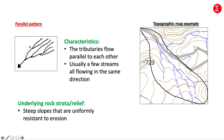In the parallel pattern, tributaries flow parallel to each other, and there are usually a few streams that all flow in the same direction. The underlying rock strata associated with the parallel pattern is that steep slopes are uniformly resistant to erosion.